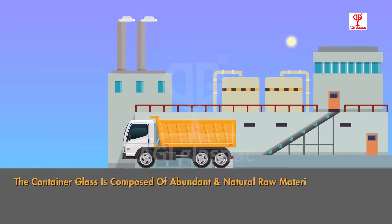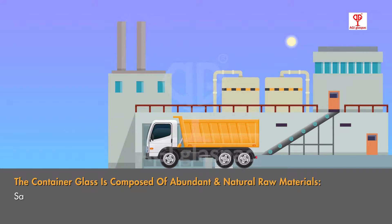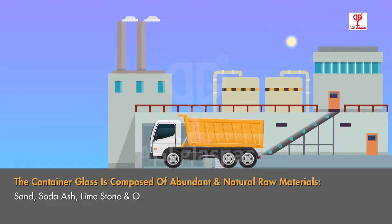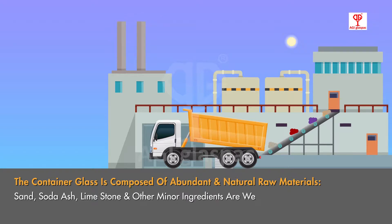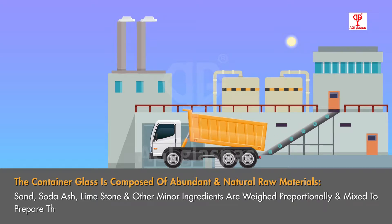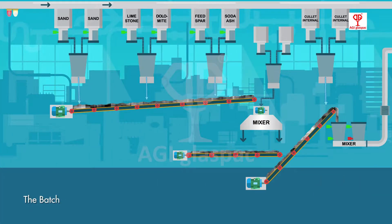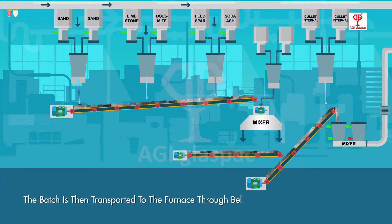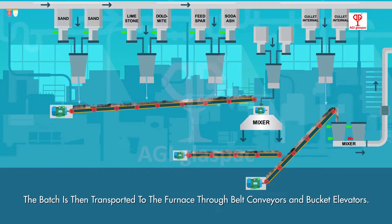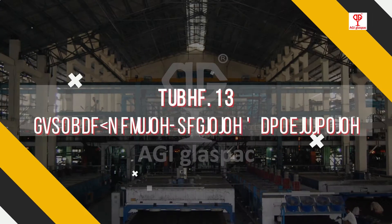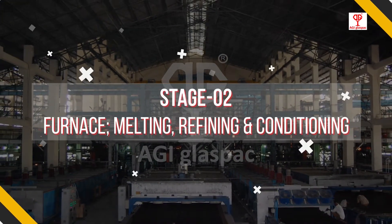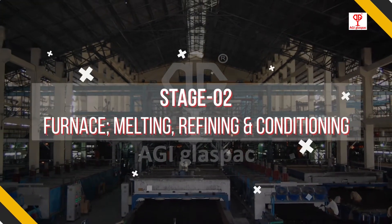Stage 1: Batch Process. Container glass is composed of abundant natural raw materials. Sand, soda ash, limestone, and other minor ingredients are weighed proportionally and mixed to prepare the batch. The batch is then transported to the furnace through belt conveyors and bucket elevators.